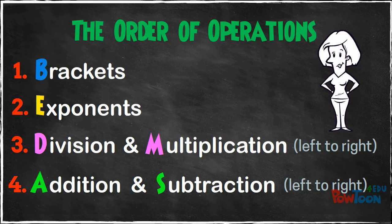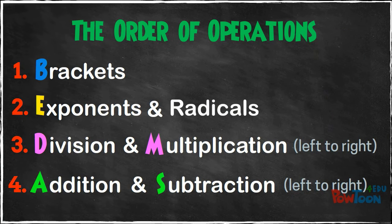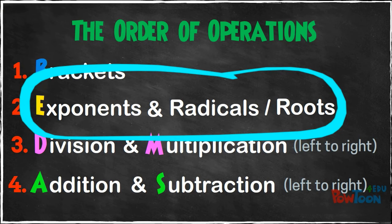Inverse operations. Now we can also add radicals or roots into the ranking order list, and we know that we're going to do them on the same line as exponents, because these are inverse operations. So we give them the same ranking priority when we do the math.